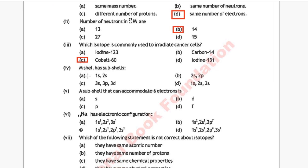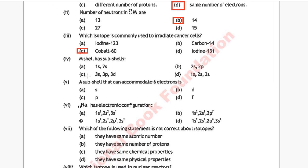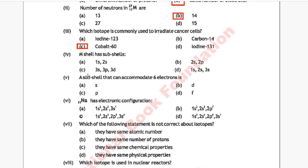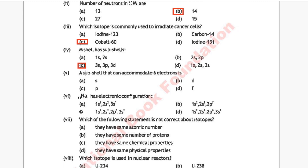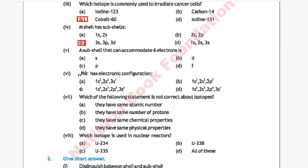Question 4: The M shell has which subshells? Option A: 1s, 2s; Option B: 2s, 2p; Option C: 3s, 3p, 3d; Option D: 1s, 2s, 3s. The correct answer is Option C, which is 3s, 3p, and 3d.